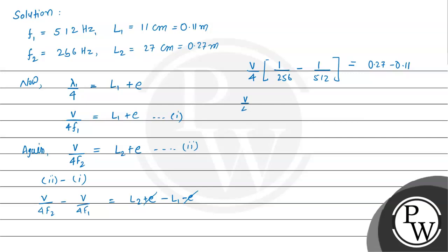So again v divided by 4. Now we have 256 and 512, the LCM will be 512. So this will be 2 minus 1 equal to 0.16. And therefore v will be equal to 4 times 512 multiplied by 0.16.